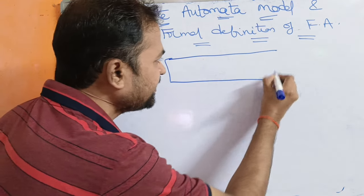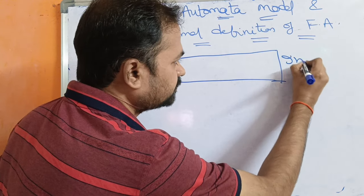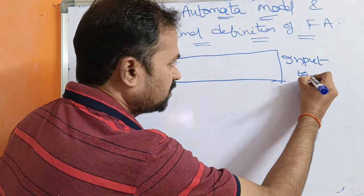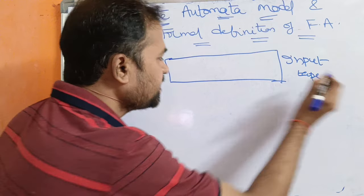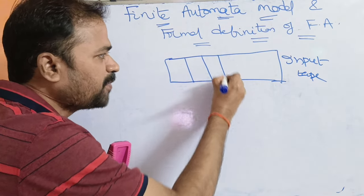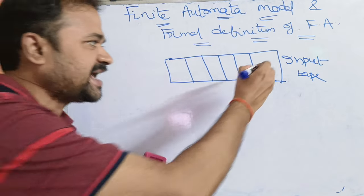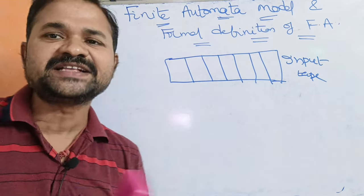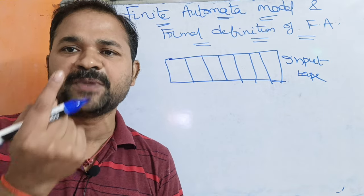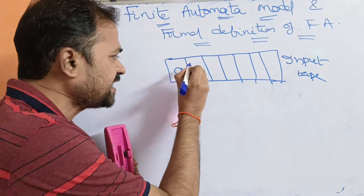The first component is the input tape. The input tape is divided into a number of cells, where each cell is capable of storing one symbol at a time. Let's have various symbols like this.